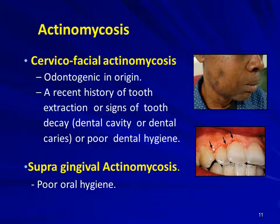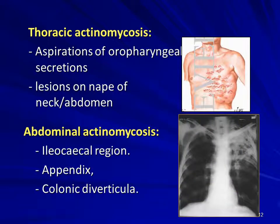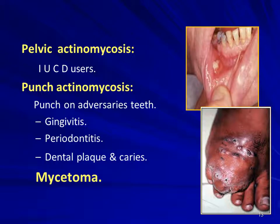The next variety is supragingival actinomycosis, mainly due to poor oral hygiene. This is caused by A. naeslundii and A. odontolyticus, the two important organisms responsible for dental caries. The third variety is subcutaneous actinomycotic mycetoma, where multiple sinuses are seen on the dorsum of the foot.